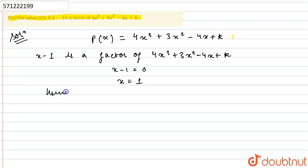Using factor theorem, p of 1 should equal 0, since x minus 1 is a factor of this polynomial. So I'll put p of 1 equals 0.